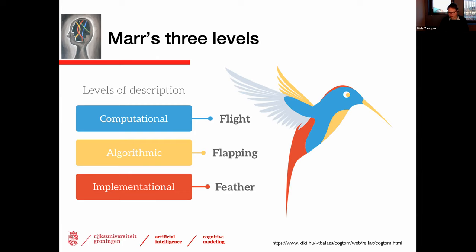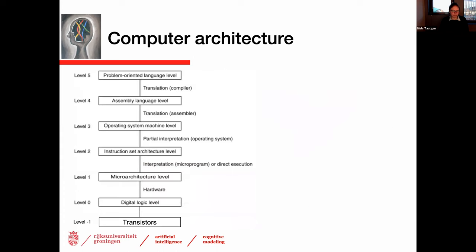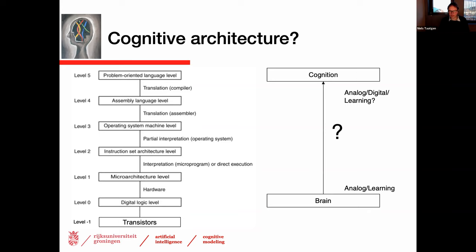A lot of research in cognitive science has looked at this algorithmic level — can we find the principles? This has given rise to debates about whether symbols or neural networks represent the key algorithmic level. But maybe there is no magic level of abstraction that explains everything. Even computers require seven levels of abstraction to be understood. So why do we think three levels are enough to understand human intelligence?